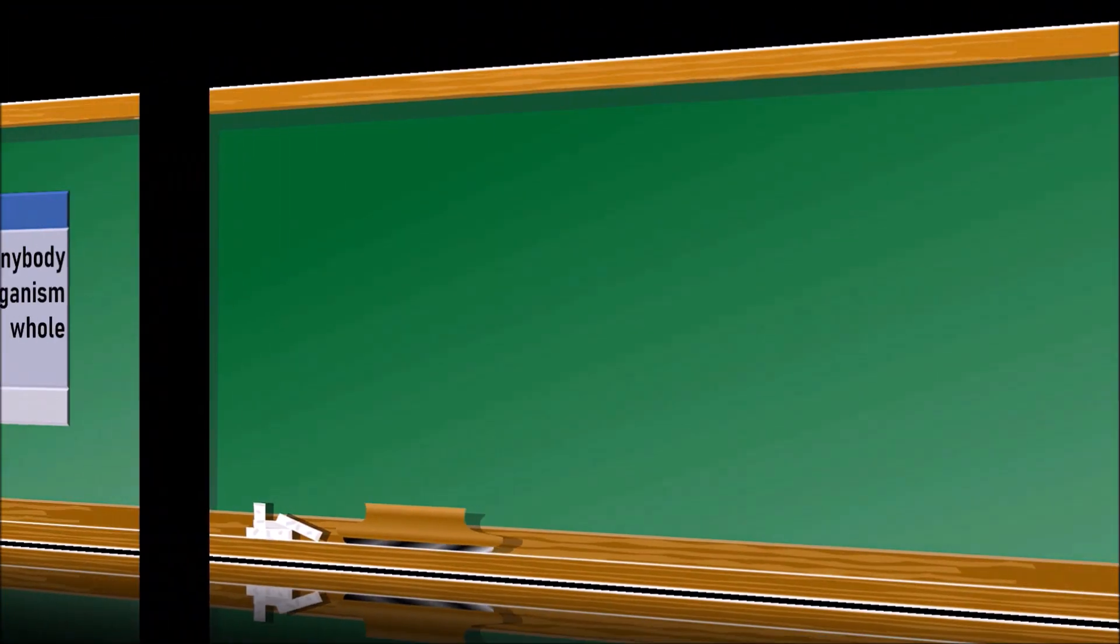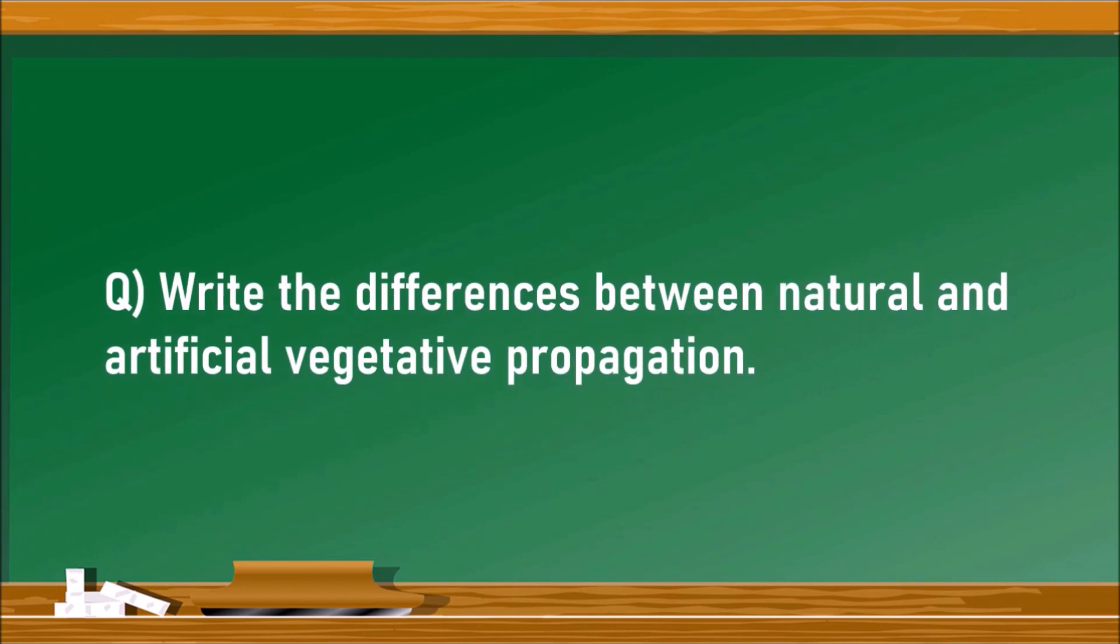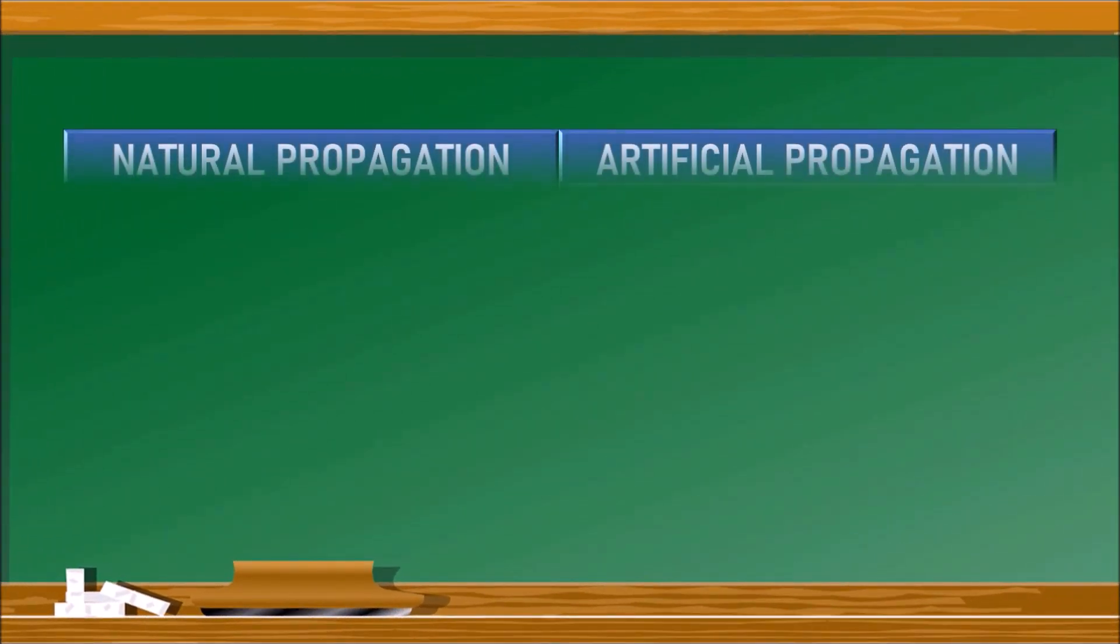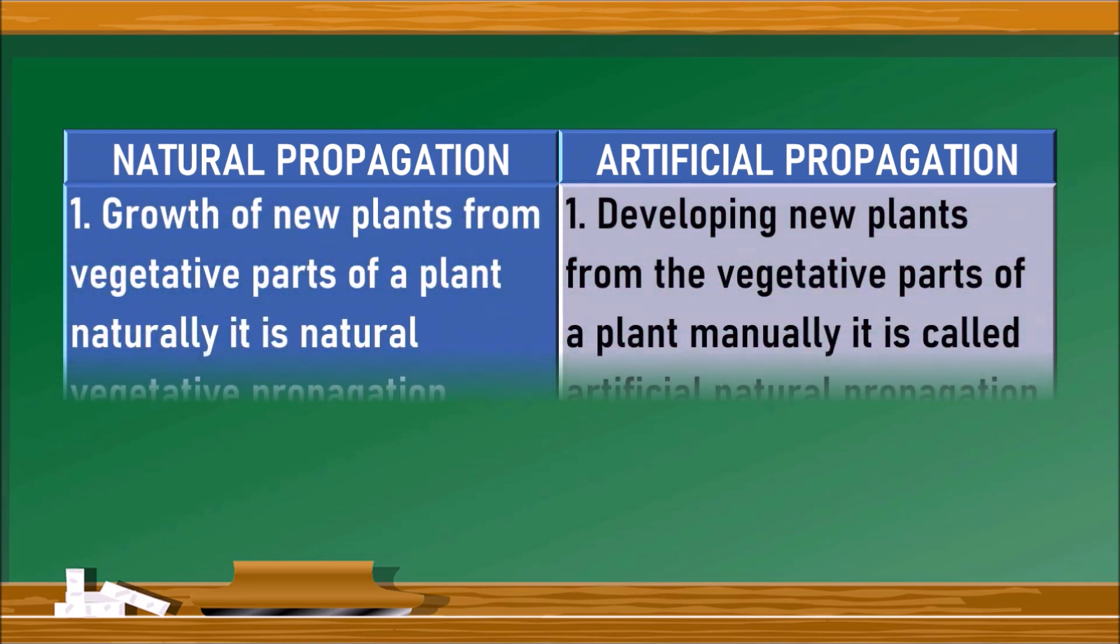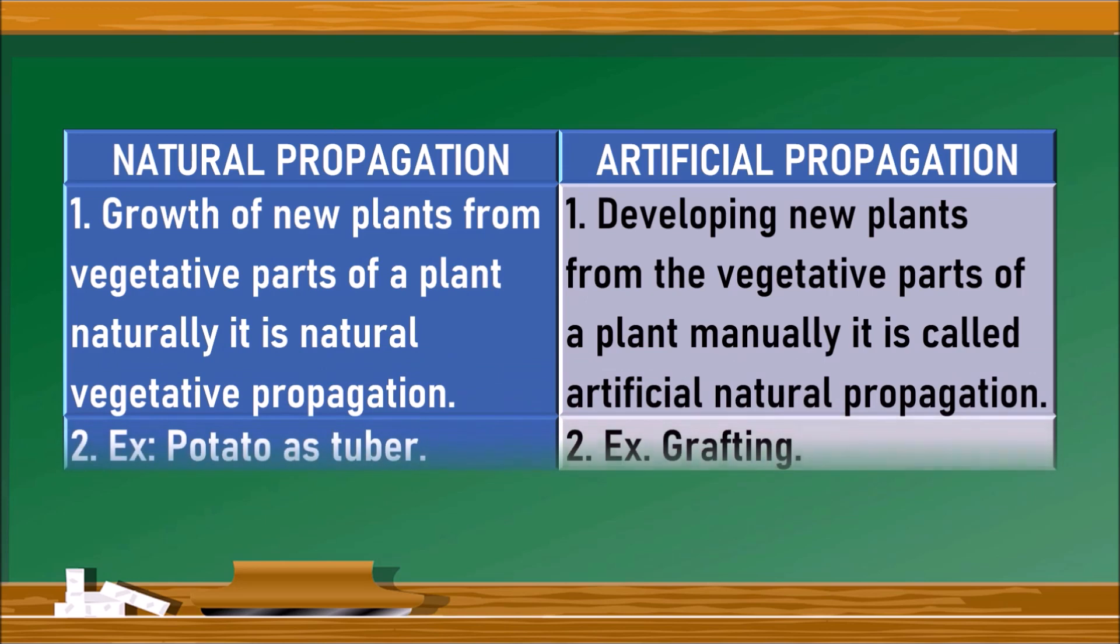Next question. What is the difference between natural and artificial vegetative propagations? Let us see the differences. Again, let us draw a table with natural propagation and artificial propagation on either side. Growth of new plants from vegetative parts of a plant naturally is natural vegetative propagation.